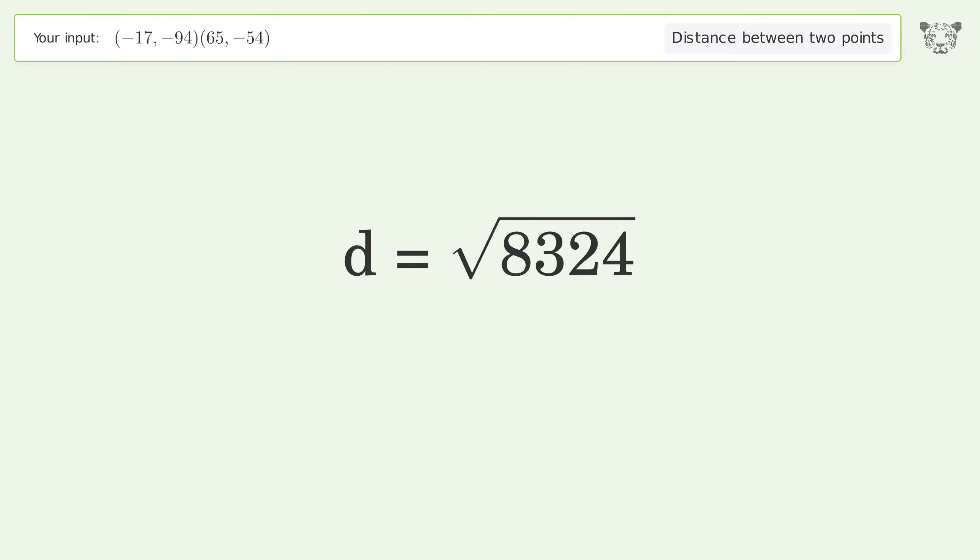And so the distance between the two points is the square root of 8324, or 91.236.